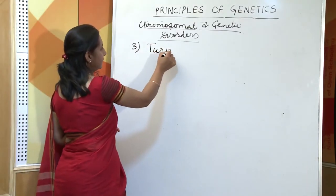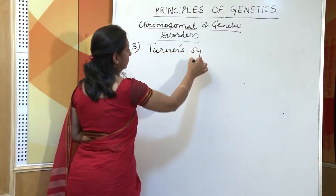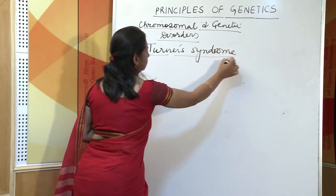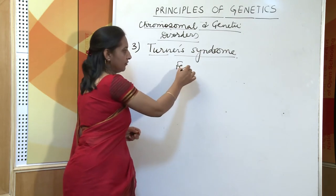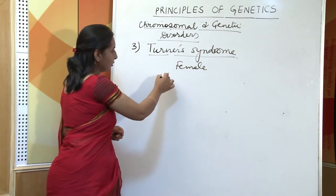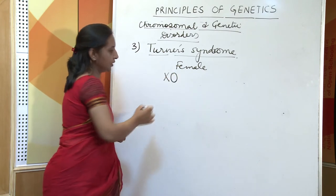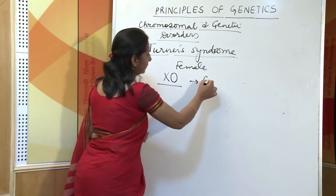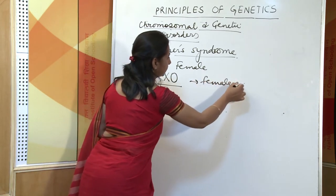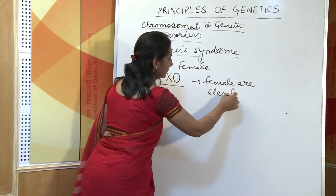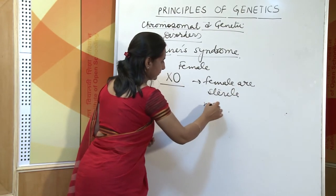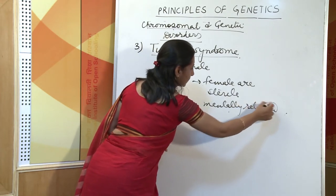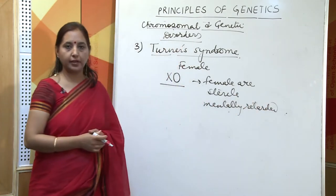The next syndrome is Turner syndrome. This occurs in females, wherein there is loss of one X chromosome, and the genotype becomes XO instead of XX. Such females are sterile and are mentally retarded as well.